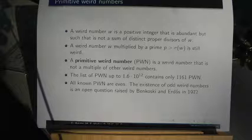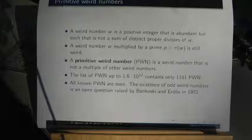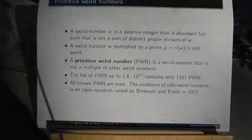We also deal with primitive weird numbers. A weird number is a positive integer that is abundant but such that it is not a sum of distinct proper divisors of itself.